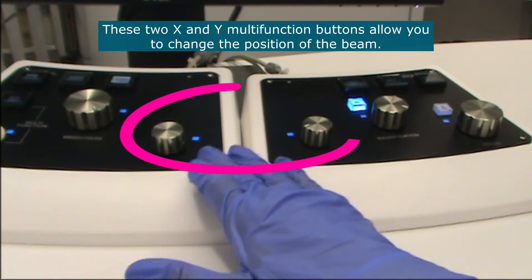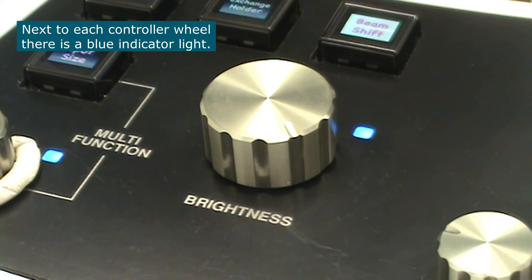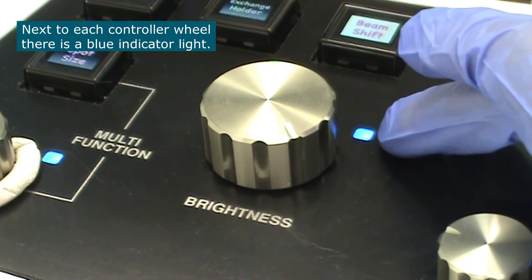These two X and Y wheels here they allow you to change the position of the beam. Next to each controller wheel there is a blue indicator light.